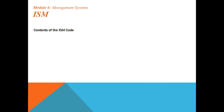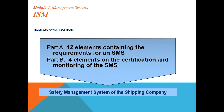What are the contents of the ISM code? We have Part A and Part B. Part A has 12 elements containing the requirements for a Safety Management System, or SMS. Part B also has four elements on the certification and monitoring of the Safety Management System.